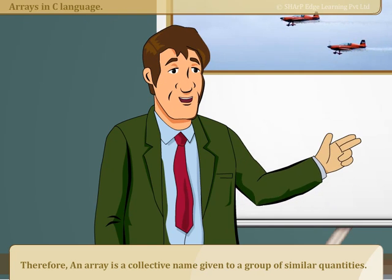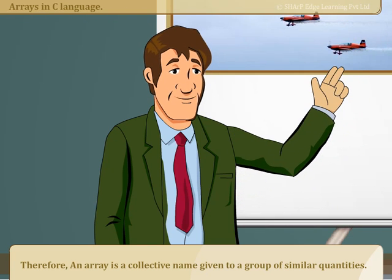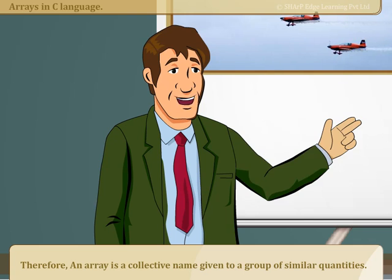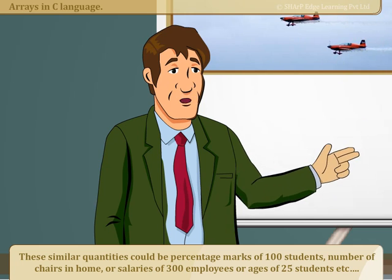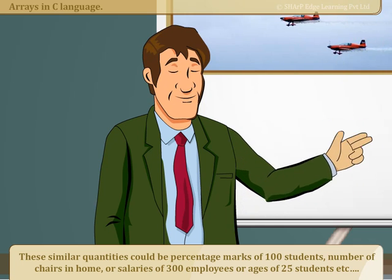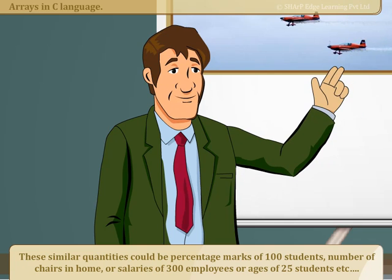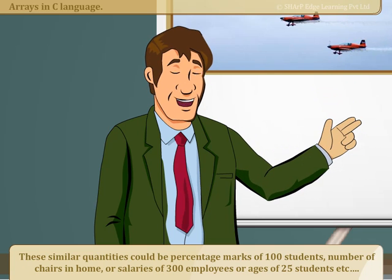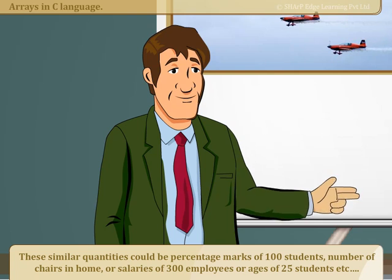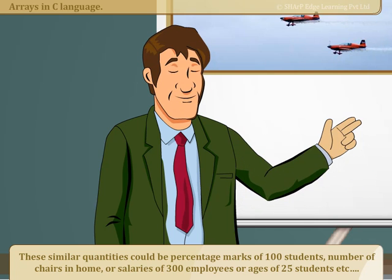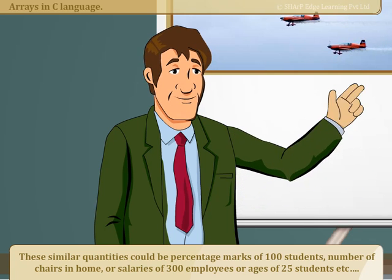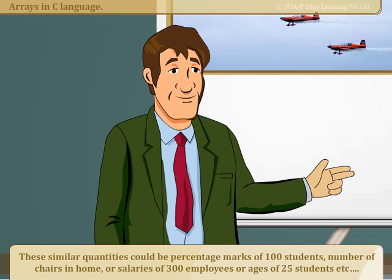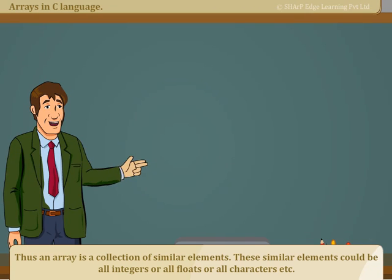Therefore, an array is a collective name given to a group of similar quantities. These similar quantities could be percentage marks of 100 students, number of chairs in home, or salaries of 300 employees, or ages of 25 students. Thus, an array is a collection of similar elements.